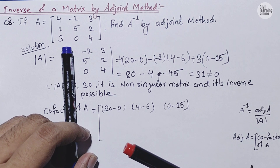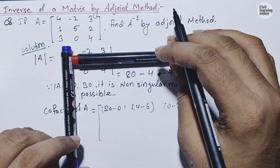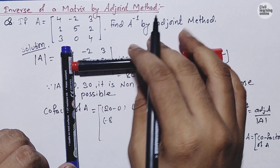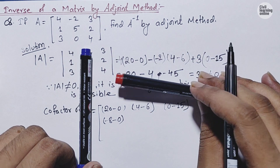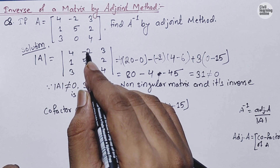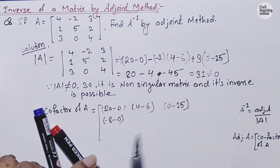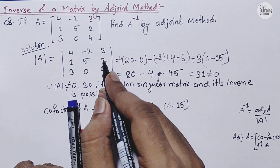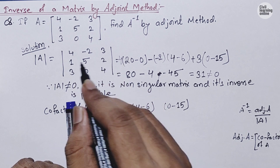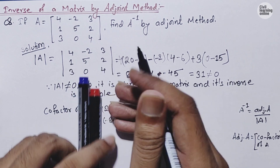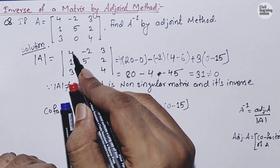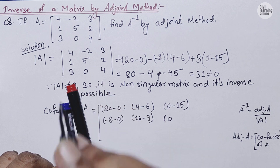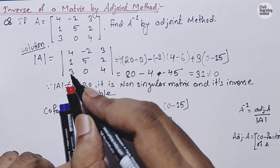For the second row: For element 1 (at position row 2), cover its row and column; remaining elements are −2, 4, 0, 2: −2×4 − 0×2 = −8. For element 5, cover its row and column; remaining elements include 4 and 3: 4×4 − 3×3 = 16 − 9 = 7. For element 2, cover its row and column; remaining elements are 4, 0, 3, −2: 4×0 − 3×(−2) = 0 + 6 = 6.